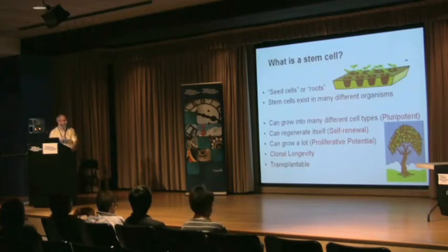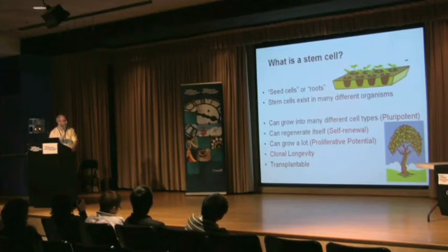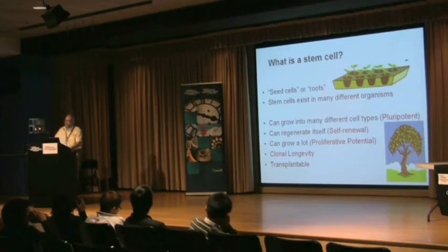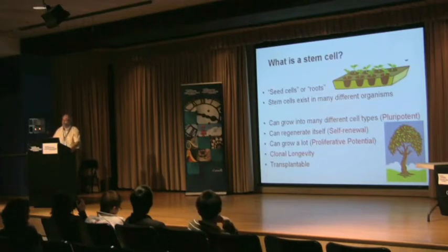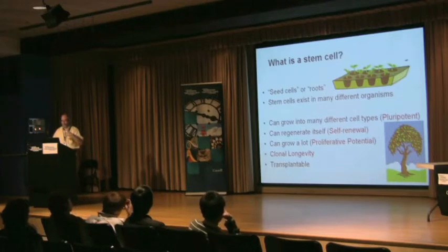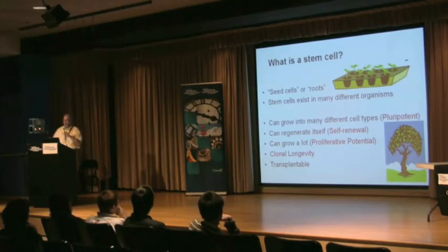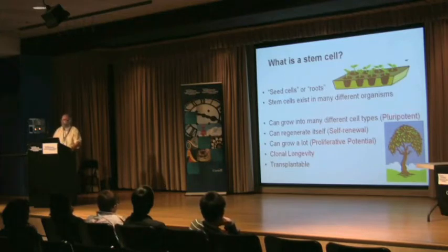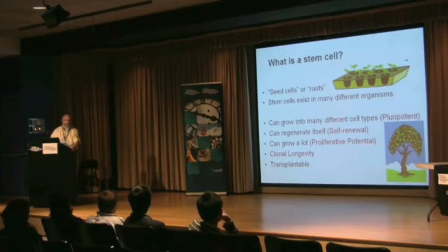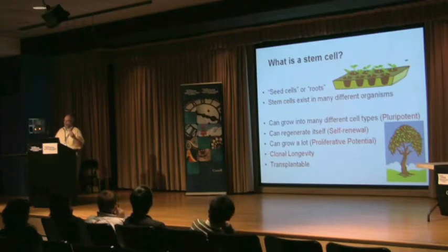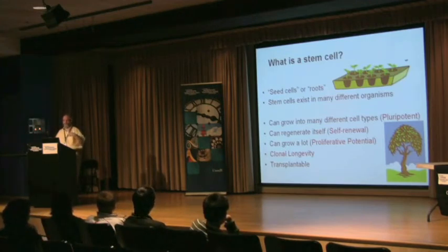I want to talk a little bit about the components in more detail. You may or may not have heard what a stem cell is. I think about stem cells as the seeds or the roots of a tissue. They exist in all sorts of different organisms, from the first multicellular organisms that live in pond scum up to humans. These stem cells have similar properties: they can grow into lots of different types of tissue — we call that pluripotency; they can regenerate new stem cells, called self-renewal; and they can divide a lot. In the human body, a few bone marrow stem cells every day allow us to produce on the order of billions of new red and white blood cells. So they have this immense proliferative potential. Finally, the useful thing about stem cells is that we can transplant them from one person to another.